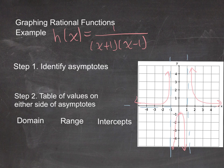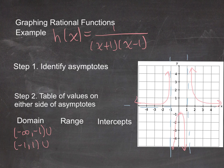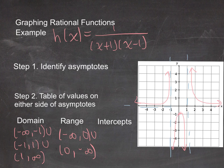The domain of h(x) has breaks at x = −1 and x = 1, giving three pieces: (−∞, −1) ∪ (−1, 1) ∪ (1, ∞). The range excludes y = 0, so it is (−∞, 0) ∪ (0, ∞). The only intercept is a y-intercept at (0, −1).